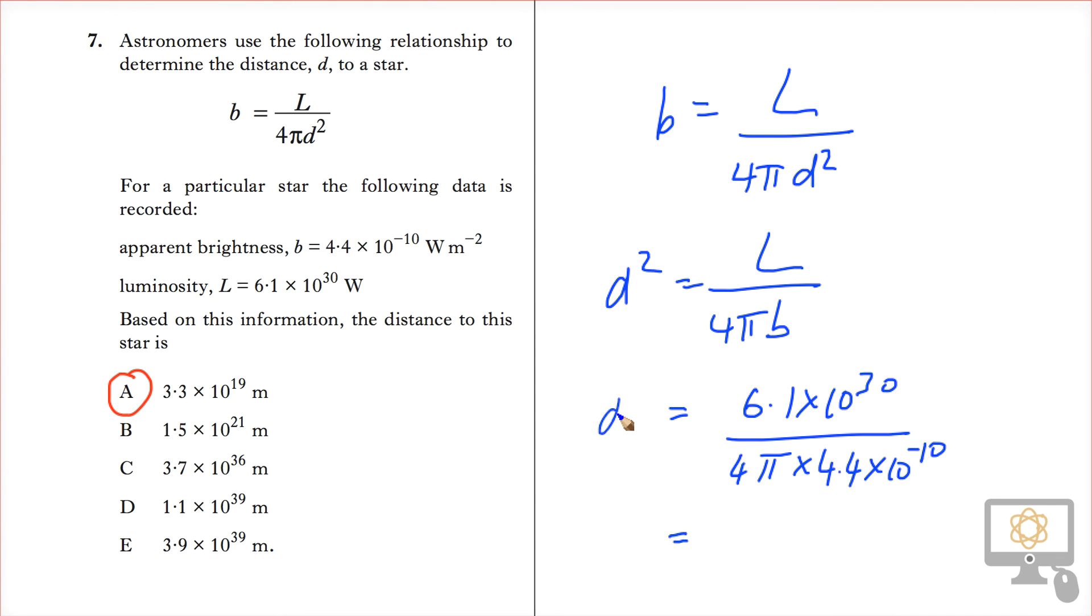And that gives us d², remember? So we need to square root our answer. d² is 1.1 × 10³⁹, and therefore that gives us a value of d as